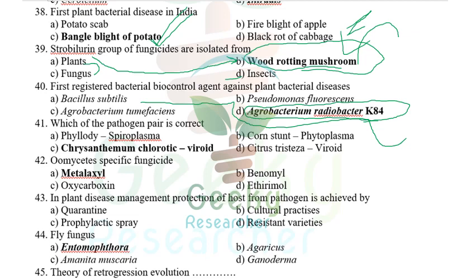Which pathogen pair is correct? Phyllody is a phytoplasma disease. Corn stunt is a spiroplasma disease. Citrus tristeza is a virus. Chrysanthemum chlorotic mottle is a viroid — and it is the largest viroid, containing 399 to 401 nucleotides.